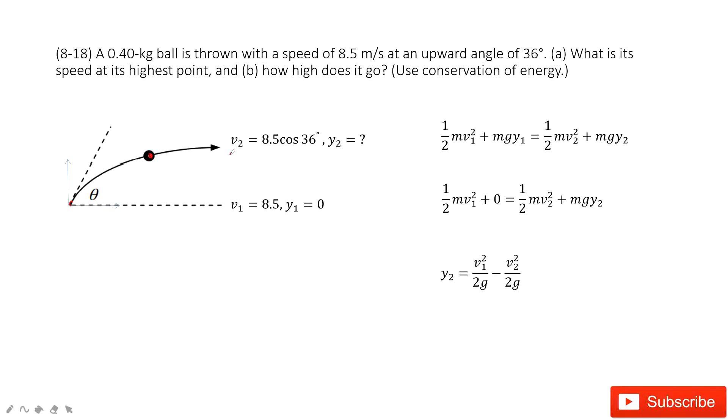So that means the velocity at this position just has the X component of the velocity for initial, right? So you can see initially, the velocity is V, and projected in the X component, it becomes the 8.5 cos theta. Agree?